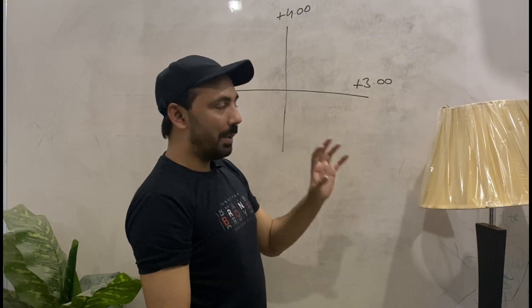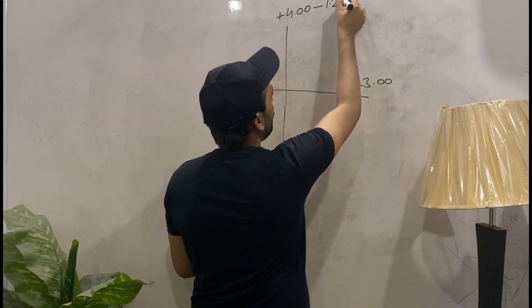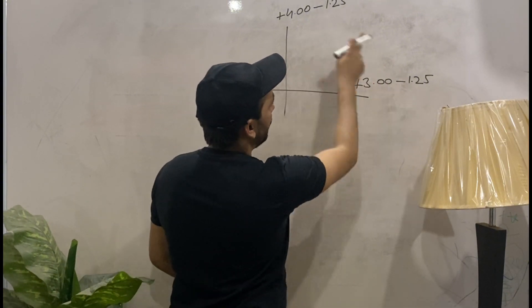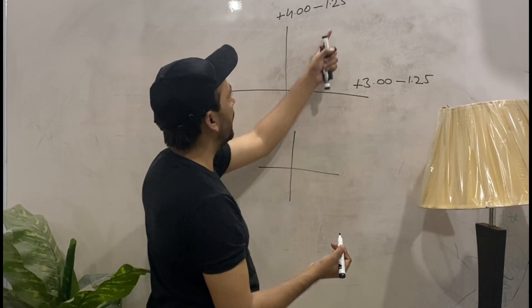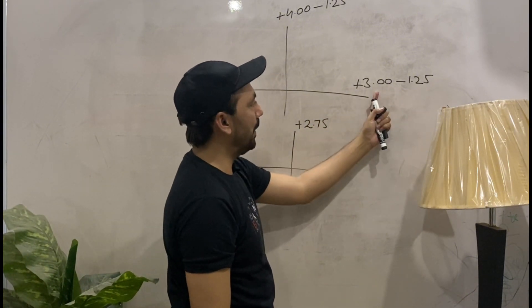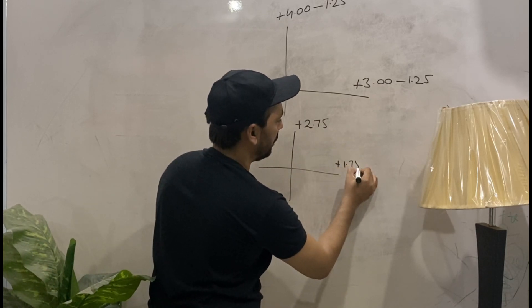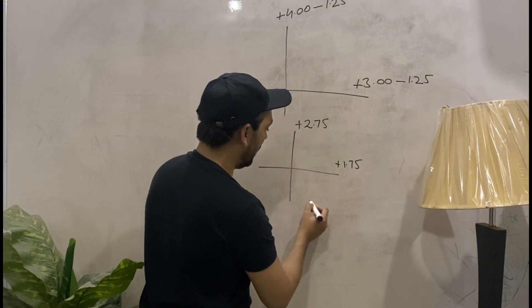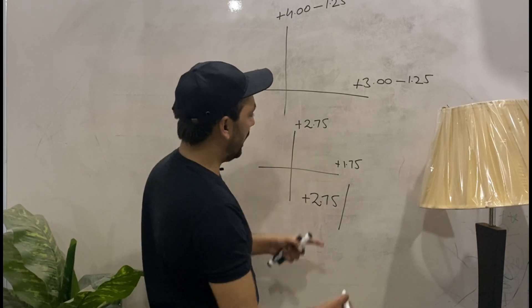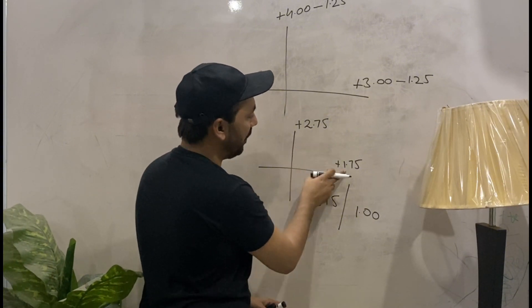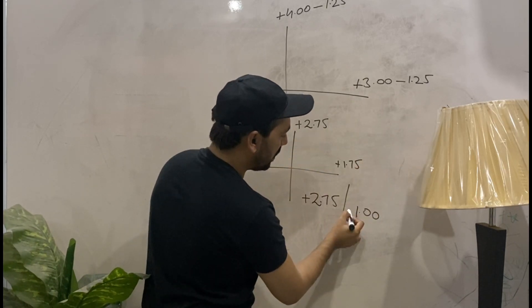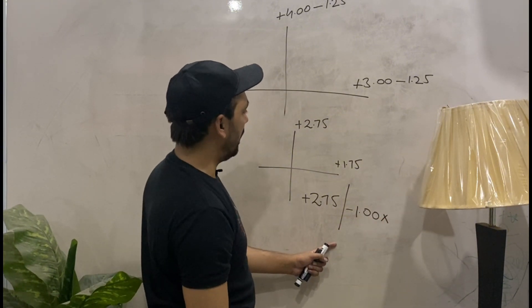With neutral points of +4 at 90° and +3 at 180°, we deduct the compensation factor of 1.25 from both values. 4.00 minus 1.25 equals +2.75, and 3.00 minus 1.25 equals +1.75. We draw a new optical cross. The spherical correction is +2.75. For the cylinder, the difference between 2.75 and 1.75 is 1. Since we are moving from more plus to less plus — toward minus — the cylinder sign is minus.